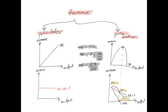Remember, the marginal revenue curve is twice as steep as the average revenue curve. The main difference to remember for a price maker is that average revenue is higher than marginal revenue, unlike a price taker where average revenue and marginal revenue are equal.